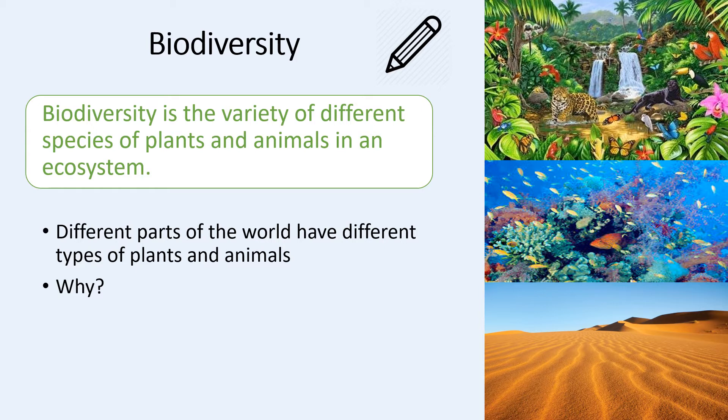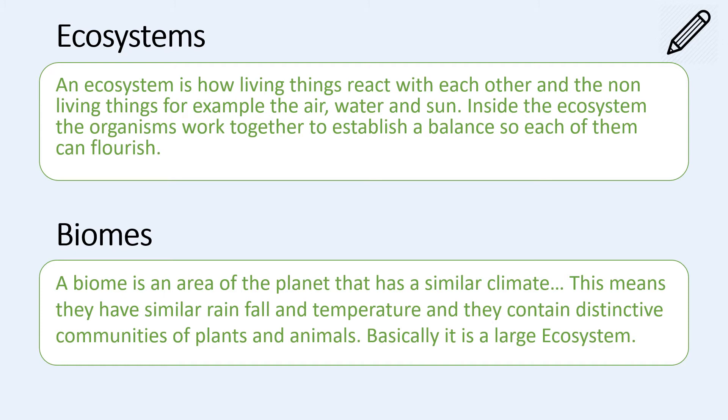This brings us to two new definitions: ecosystem and biomes. Ecosystems are how living things interact with each other and also the non-living things in their environment — for example air, water and sun. Basically your ecosystem is your living things and your non-living things together in a particular area, and the organisms work together to establish a balance so each of them can flourish. A biome is an area of the planet that has a similar climate, meaning similar rainfall and temperature, and contains distinctive communities of plants and animals. Basically it's a large ecosystem.